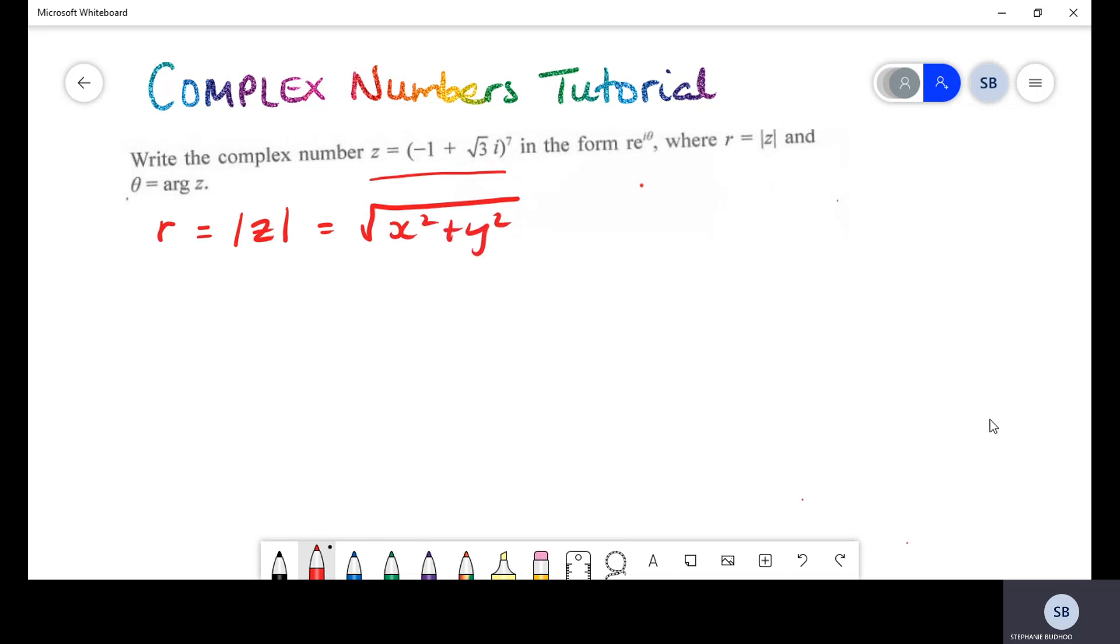Where x is our constant and y tends to be the coefficient of i. Also, if you guys can recall, we have the value of θ which follows a formula, and that formula is tan inverse of y on x. Don't mix them up and have x on y. These are essentially the two formulas you would use when solving basic complex number questions, and they're asking for that value of r as well as θ.